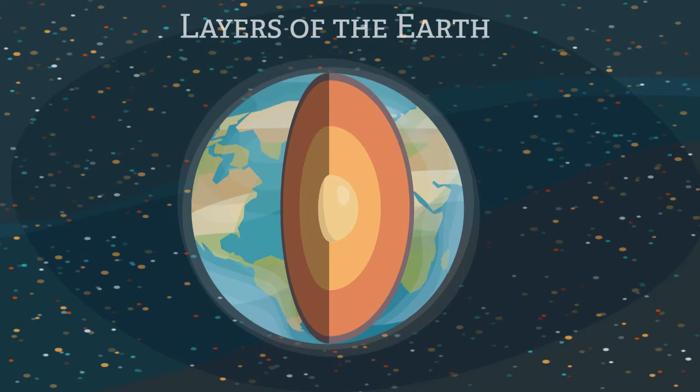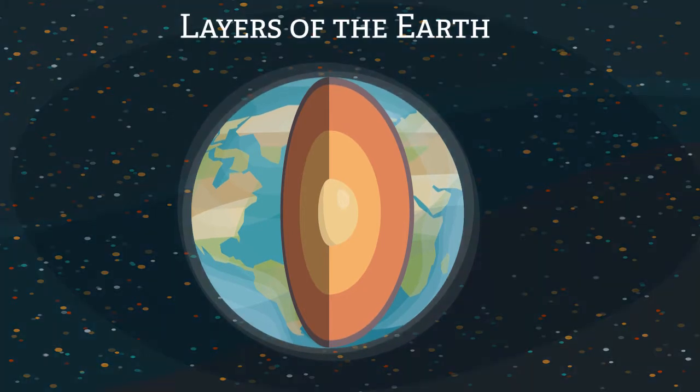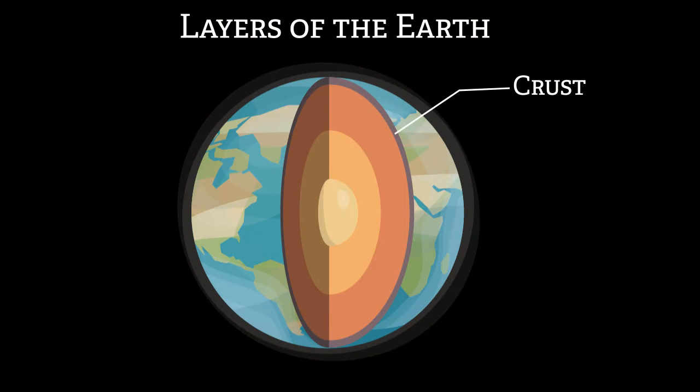To understand how these changes occurred, we need to first look at the structure of the Earth. The crust is the outermost layer of the Earth that is 45 kilometers thick and is made of many rocks, dirt, and metals, and is heated by the Earth's mantle and outer core.